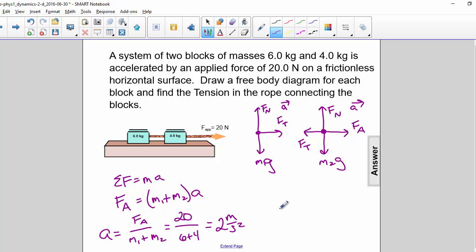Now to find the tension, we are only going to take the 6 kg block. So our sigma F equals M A, there is force of tension equals M1 A. So the force of tension will be equal to 6 times 2. So the force of tension is equal to 12 N.